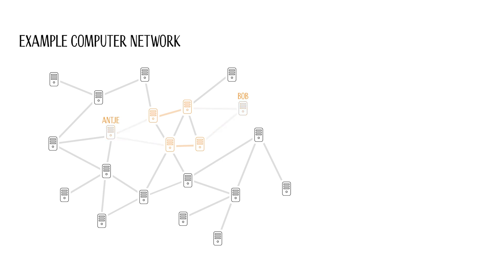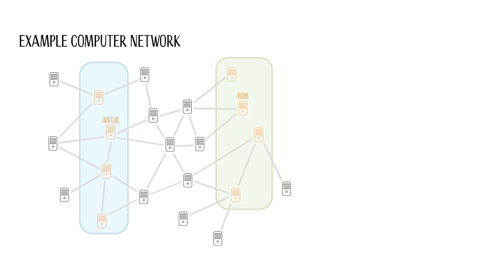If Antje's or Bob's computer fails, an alternative connection would not help them. They know how to solve the problem: each of them invites three friends to their home. These friends also start phone calls in pairs. One person at Bob's side always talks to one person at Antje's side. This way, the group of friends can communicate with each other, even if one of their computers fails. Thus, the connection becomes less error-prone.